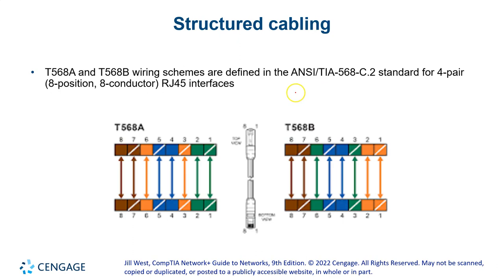This ANSI TIA 568 standard — the B standard is the one I use most frequently. The A standard is allowed, and some older admins swear by the A standard, but the B standard is what I use. If you haven't seen an Ethernet cable before, especially one that is unterminated, what you'll see are eight mini wires that come out of the insulation.